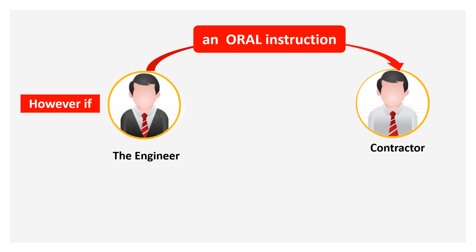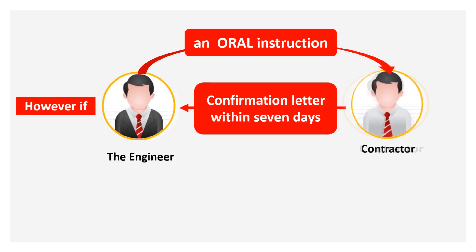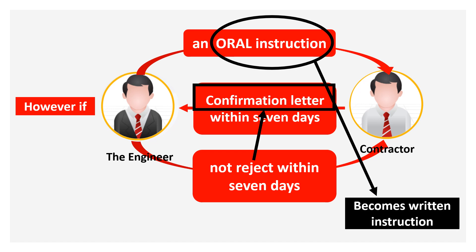In order to confirm oral instructions, the contractor can issue a confirmation letter within seven days of receiving an oral instruction. And if the engineer does not reject or contradict that confirmation letter within seven days, the oral instructions become written instructions.